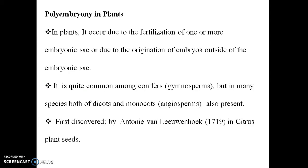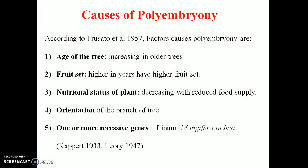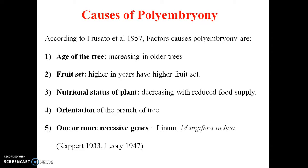Polyembryony was first described in 1719 in citrus plants. It is related to the age of trees and fruit set. In older trees, a higher fruit set is observed. Nutritional status also plays a role — if food supply decreases according to orientation, it affects polyembryony.